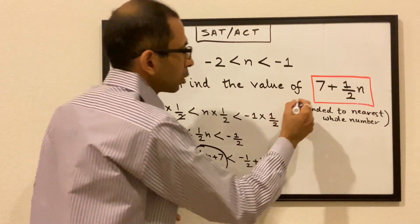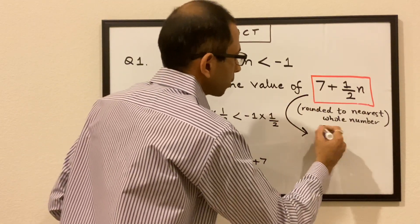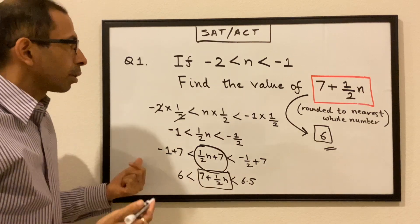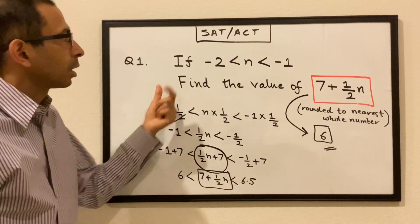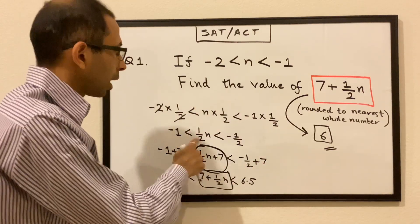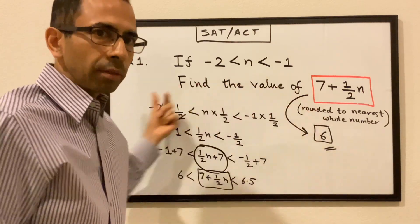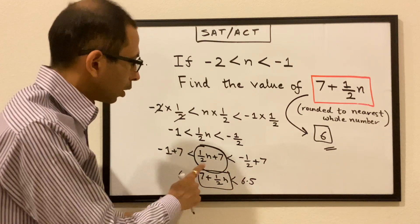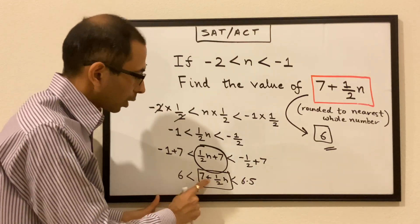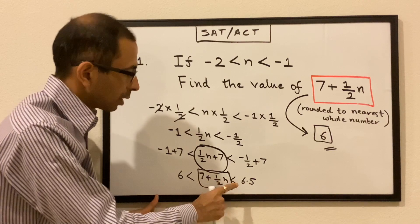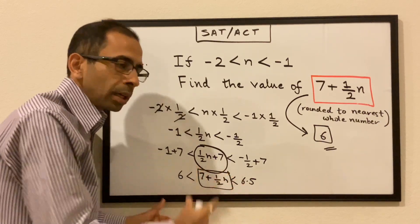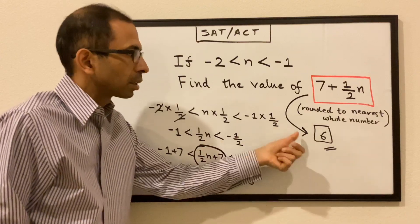When we round it off to the nearest whole number it will always come down to 6, so the answer is 6. To reiterate: we multiplied the inequality by half to get half n, then added 7 to the entire inequality to reach 7 plus half n, getting it between 6 and 6.5, so the rounded answer is 6.